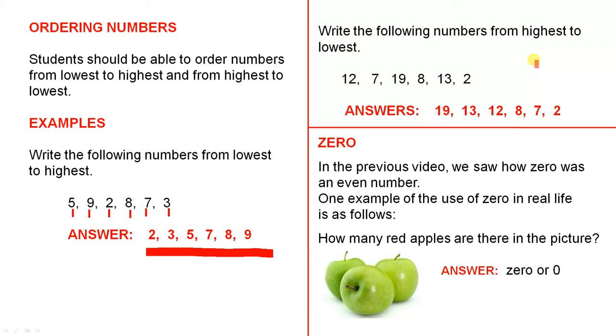Write the following numbers from highest to lowest. Again, mark them off systematically so you don't miss any. 19, so we have to be careful. 19, 13, 12, 8, 7, 2. And there they are from highest to lowest.